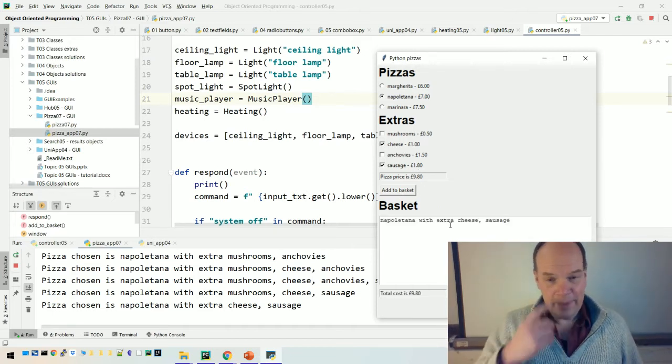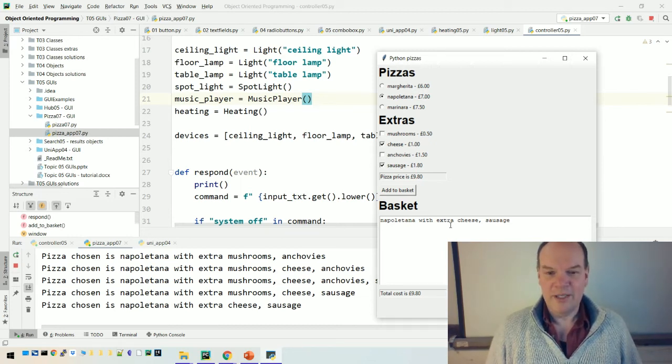And at that point the app constructs a pizza object and puts it in the basket. This is like we did when we created random pizzas and put a whole bunch of random pizzas in a list.